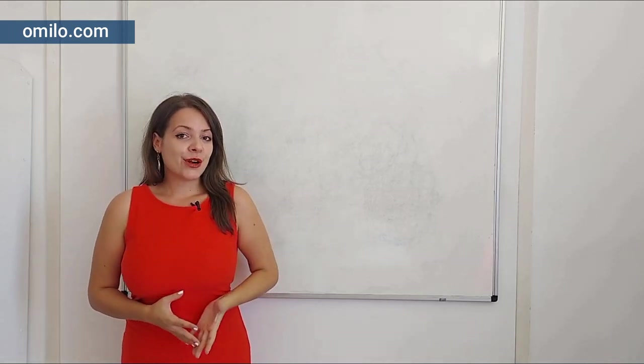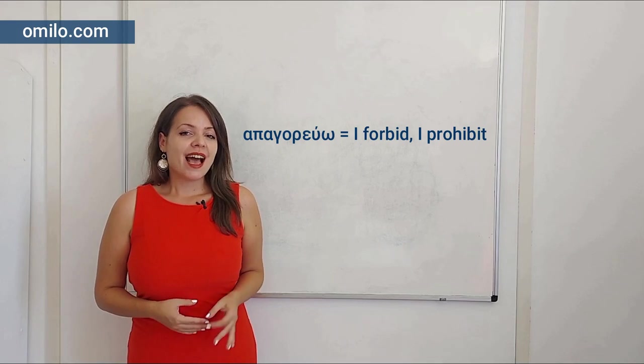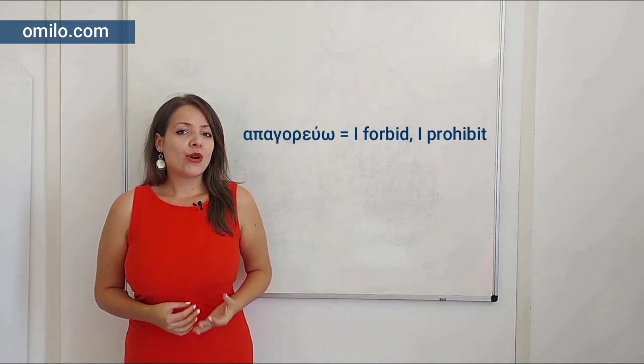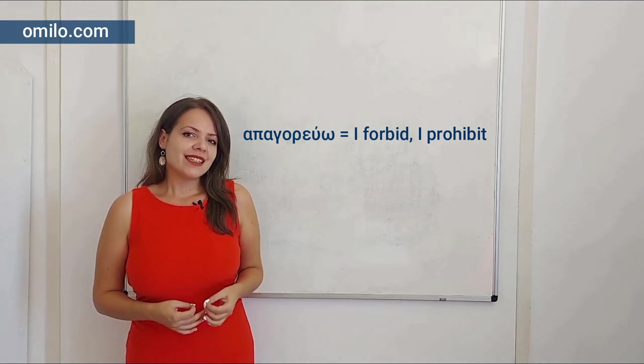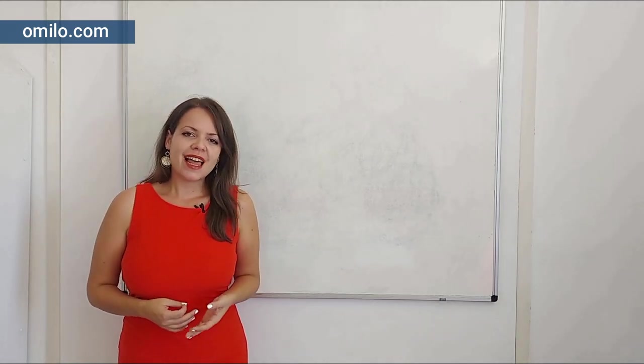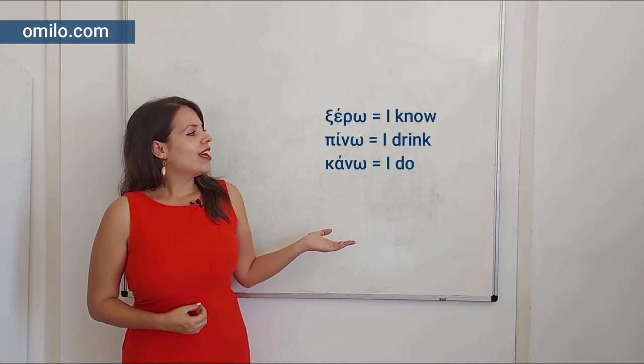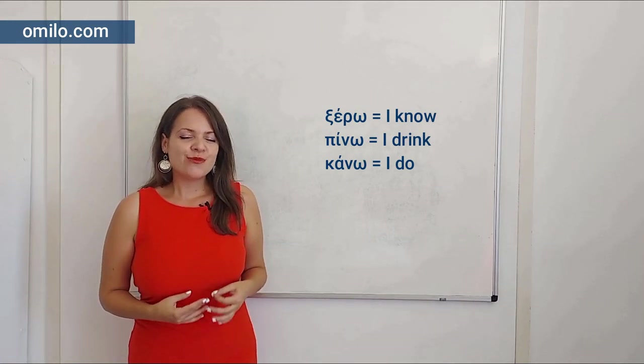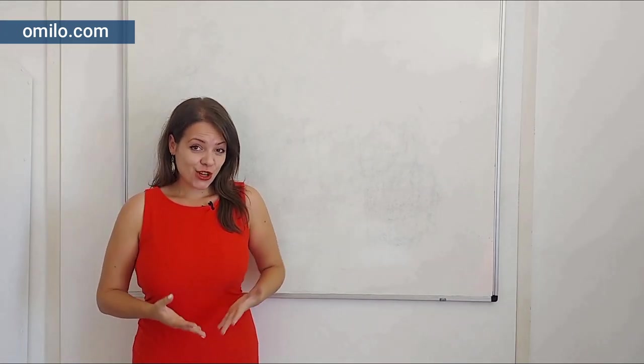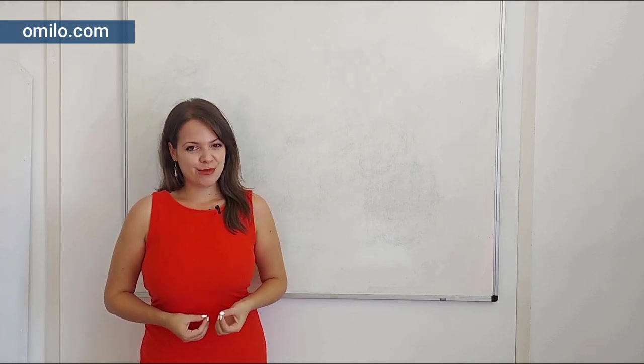Let's learn the verb απαγορεύω, which means I forbid, I prohibit. This is the active form and it is conjugated as normal active verbs. For example ξέρω, πίνω, κάνω. All verbs you can find in our YouTube videos language list. So let's see the conjugation of απαγορεύω in present tense.